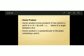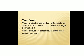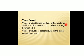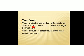Vector product is also known as cross product — just like dot product is also called scalar product. The vector product of two vectors a and b is denoted by a cross b. It is read as 'a cross b', not 'a into b'. That's why it is known as cross product.